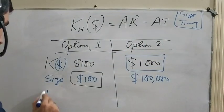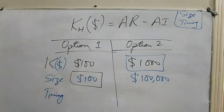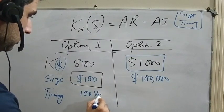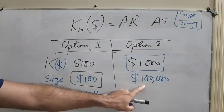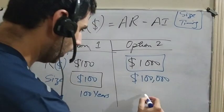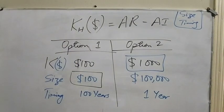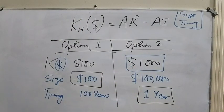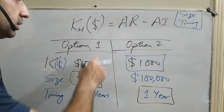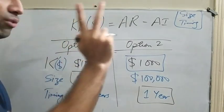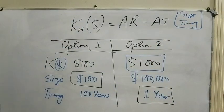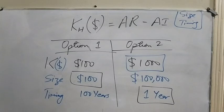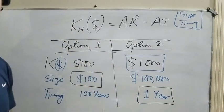Now add timing information. Option one gives $100 return after 100 years, while option two gives $1,000 return in just one year. Now option two is preferable. In summary, when calculating return in dollars, you face two issues: size of investment (how much you need to invest) and timing of return (when you'll receive it). Without these two pieces of information, your decisions will be incomplete or not considered robust.